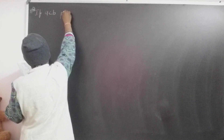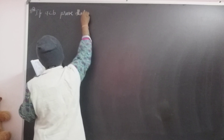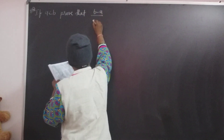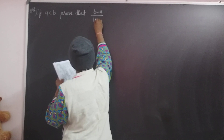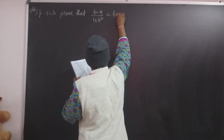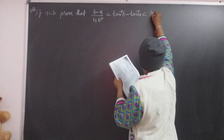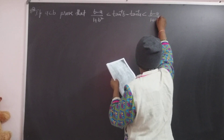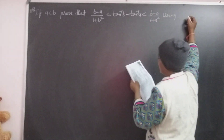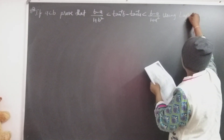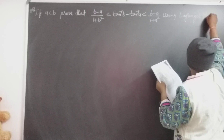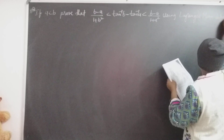If A is less than B, prove that B minus A by 1 plus B squared is less than tan inverse B minus tan inverse A, which is less than B minus A by 1 plus A squared, using Lagrange's mean value theorem.